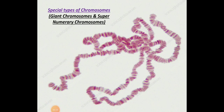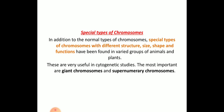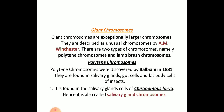So the special types of chromosomes are giant chromosomes and supernumerary chromosomes. These special chromosomes differ from normal chromosomes in structure, size, shape, and function. They are usually useful in studying cytogenetics. Giant chromosomes are exceptionally large chromosomes.